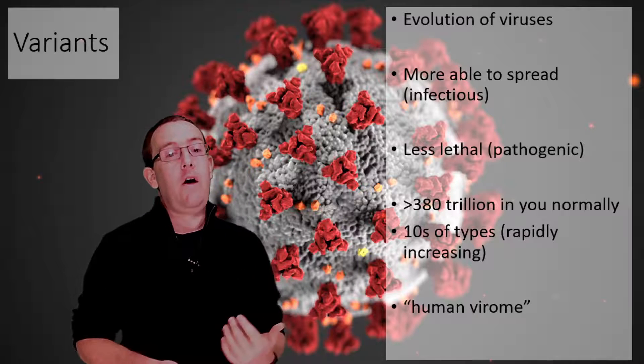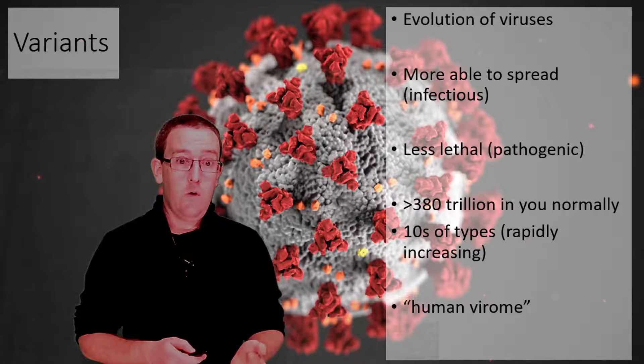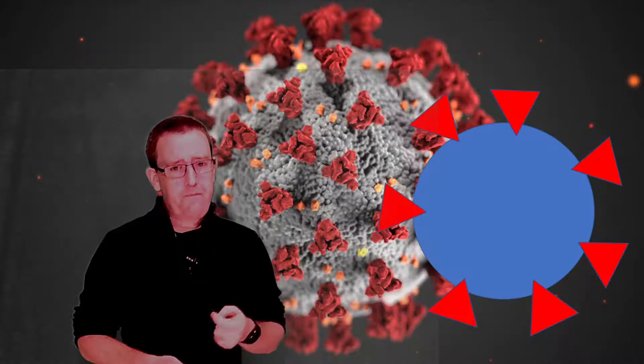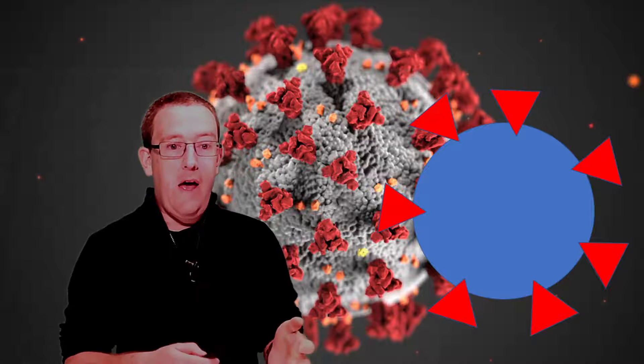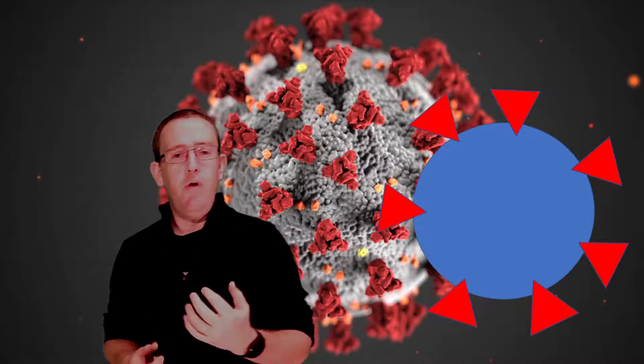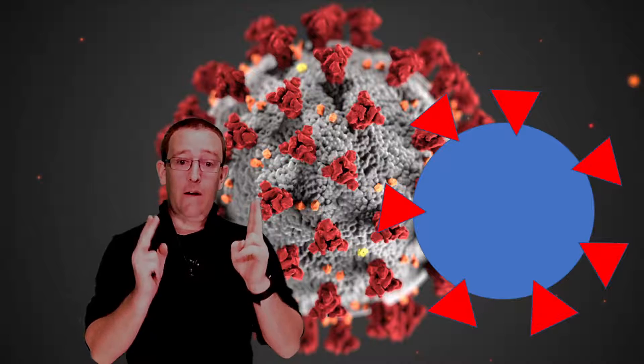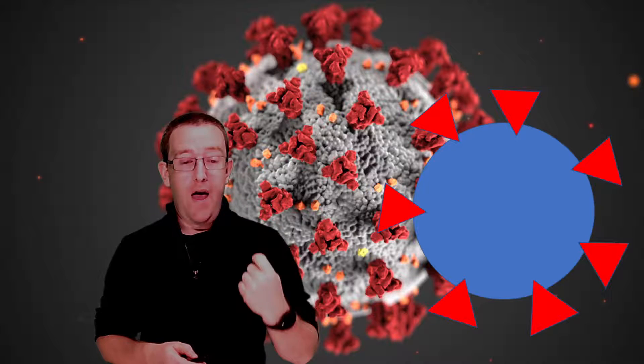The problem comes in terms of reporting this, when we talk about antigens and antibodies in a really simplistic way. When you see pictures on the news of the COVID virus, it's the spike proteins that stick out that allow it to get into your cells and undergo mutations.